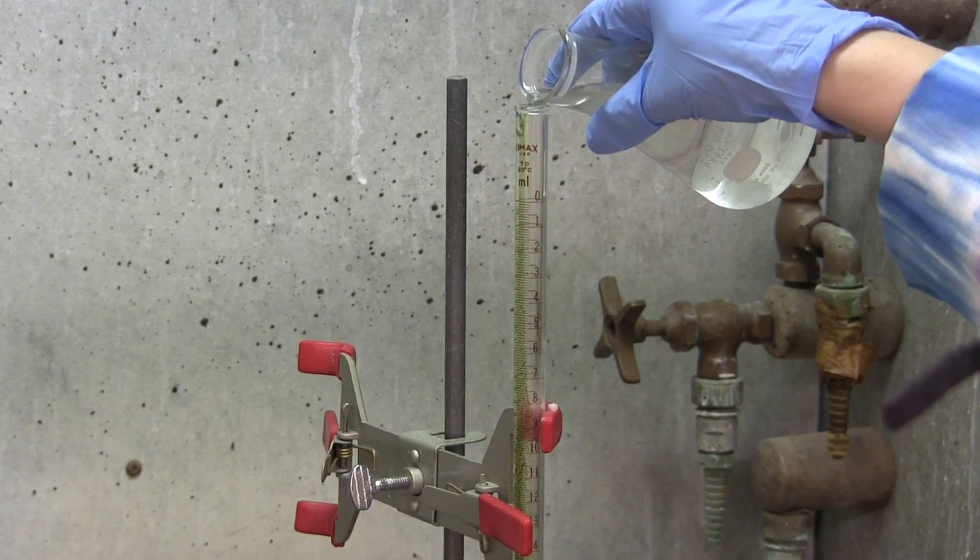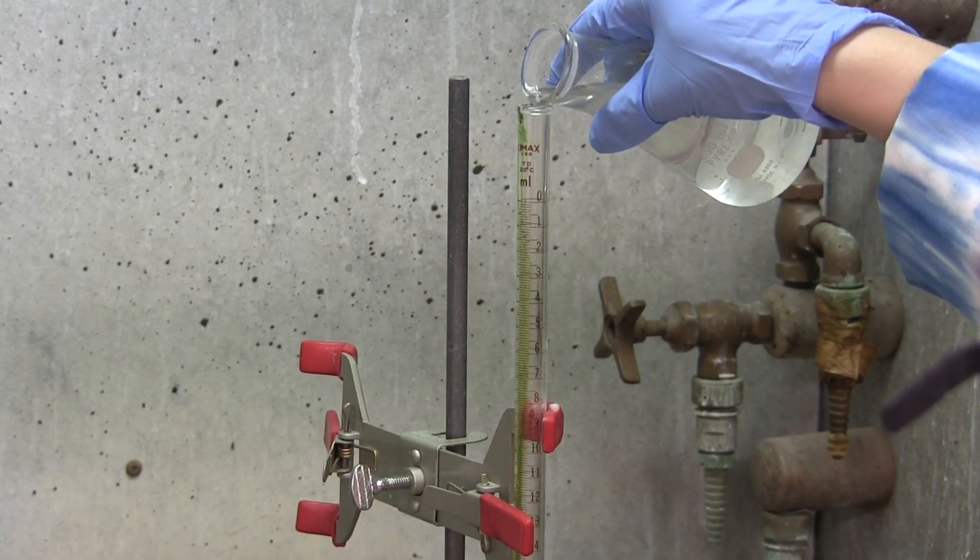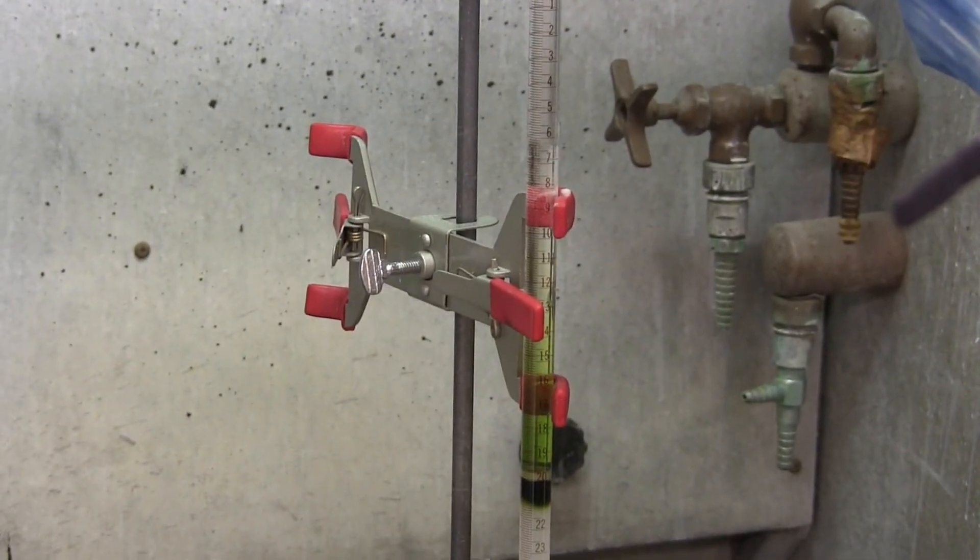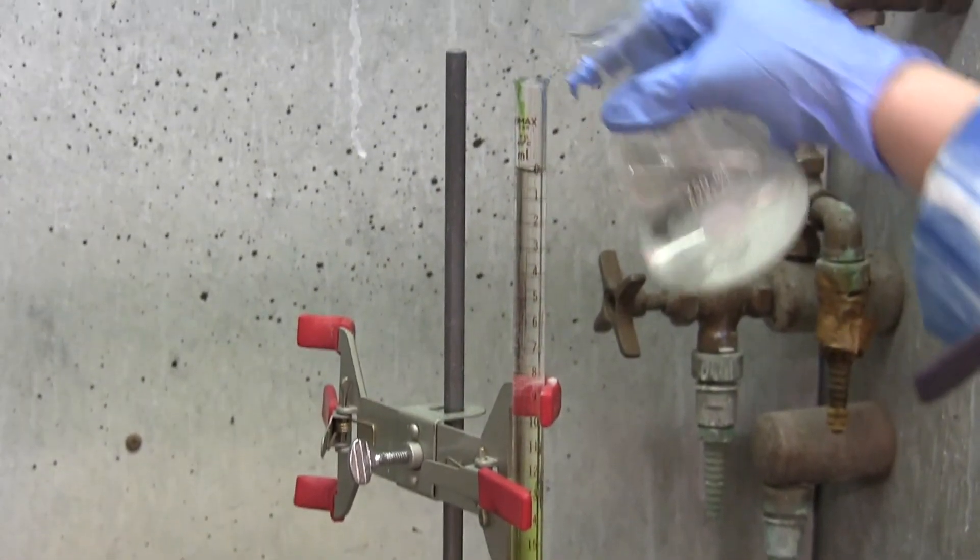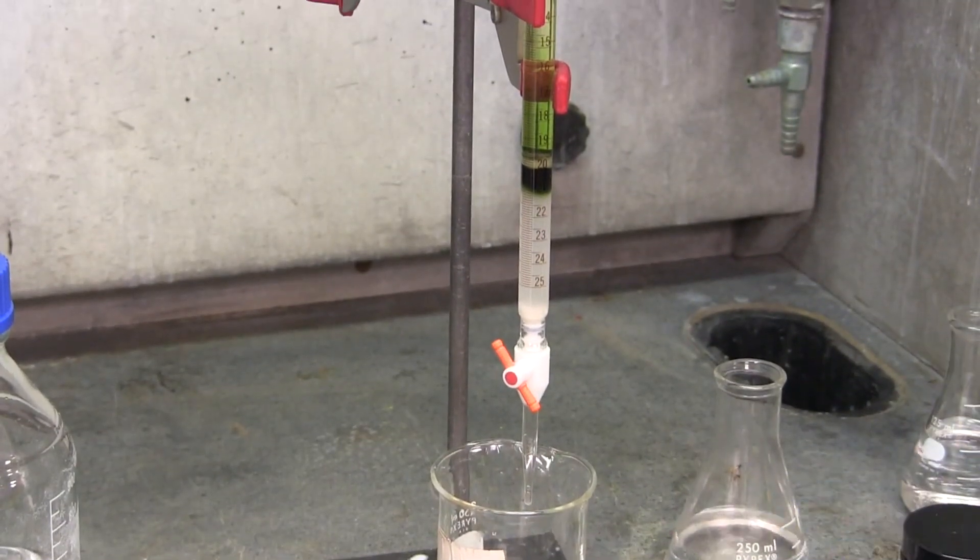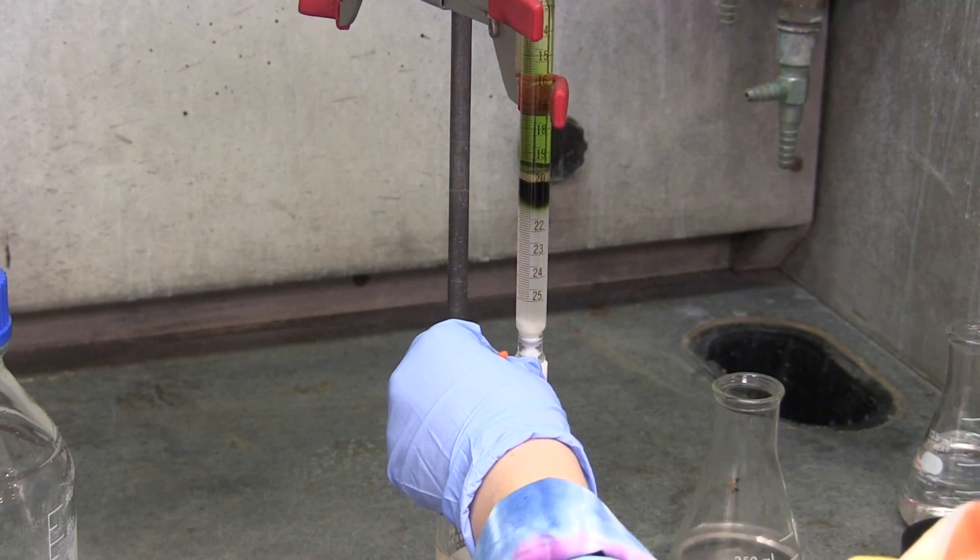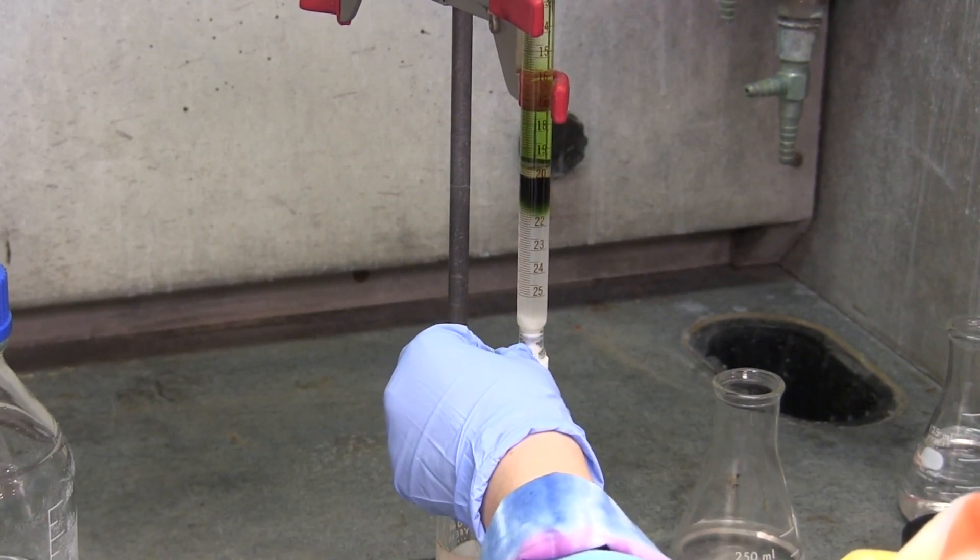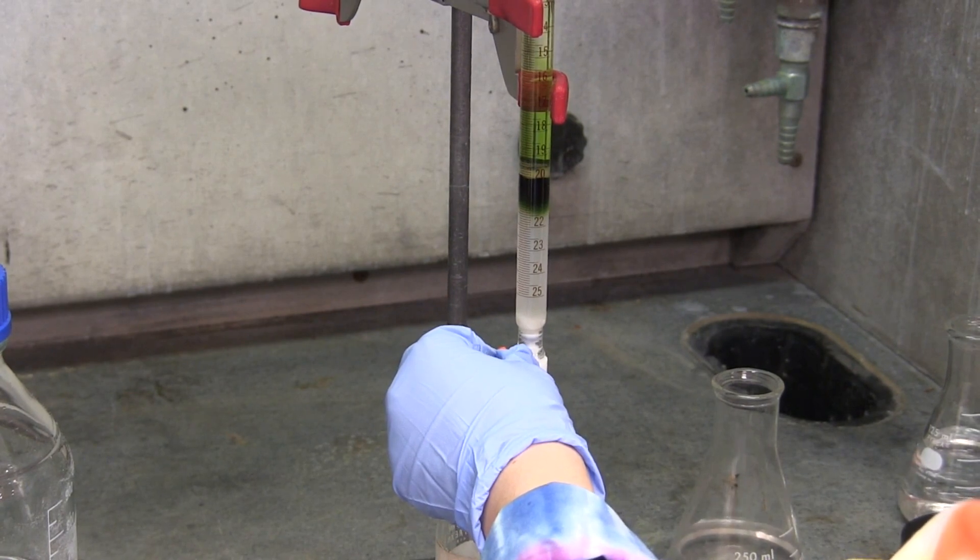The 100% hexane solvent is added to the column, and then the stopcock is opened to allow a steady drip that isn't too fast. This will allow the solvent to start running through the silica column and separate the compounds by their polarities. The silica is the stationary phase of the column and polar, thus more polar compounds will be attracted to it. The solvent is non-polar, which will help elute the more non-polar compounds from the sample.